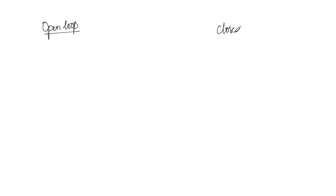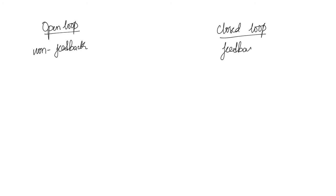A control system can either be an open loop control system or a closed loop control system. Open loop systems are also called non-feedback systems — that means they will not have feedback. We will see what is meant by feedback shortly. Closed loop systems are those which have feedback.